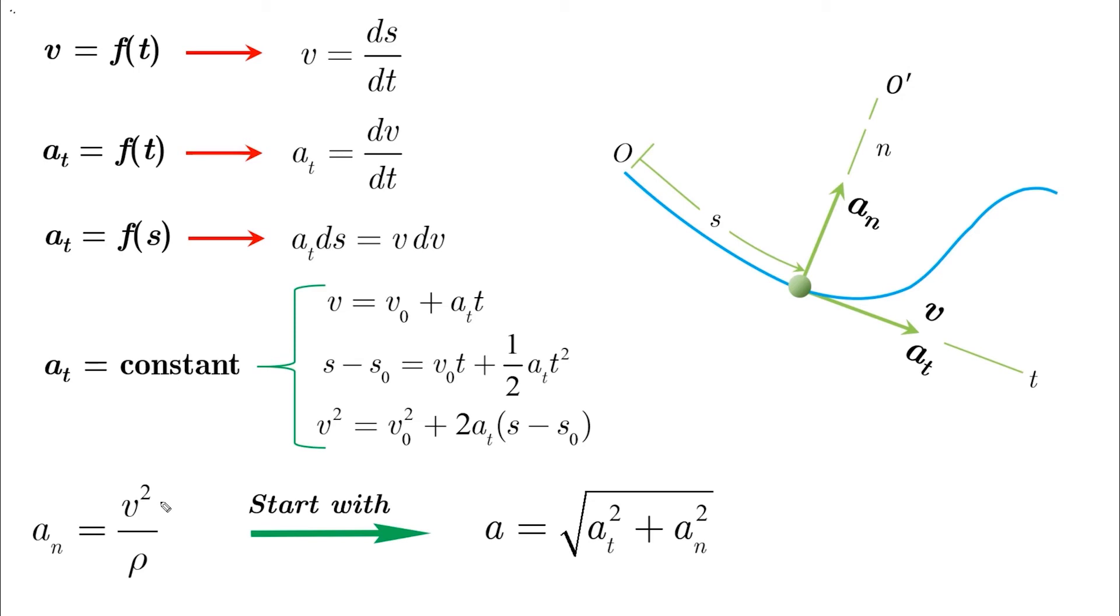So your only unknown now is An. If you can find An, the problem gives you V, you can solve for the radius of curvature. And to find An, you have to start with the total acceleration equation.